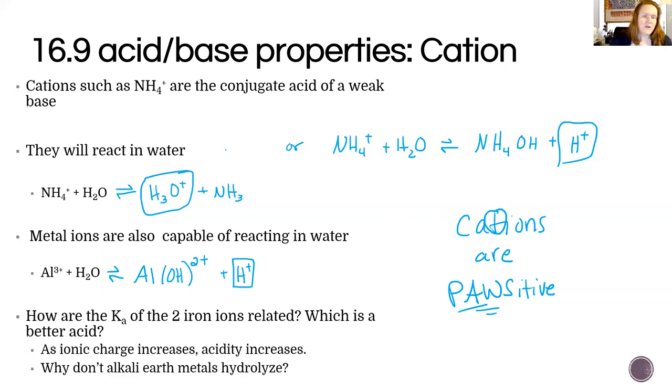So when we react cations in water, they're either going to be acidic or they will have no effect on pH if they form a conjugate that is strong. So like Na+ on the last slide was a cation, but it was not a reaction. So those are the two kinds of things that you can expect.